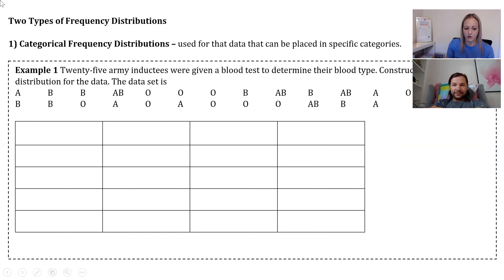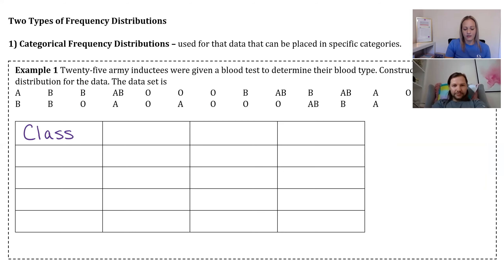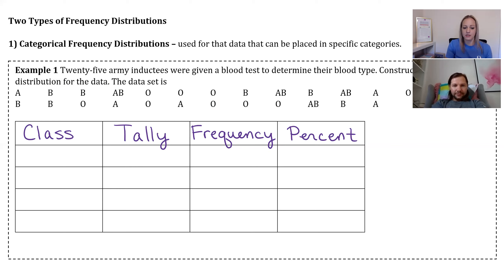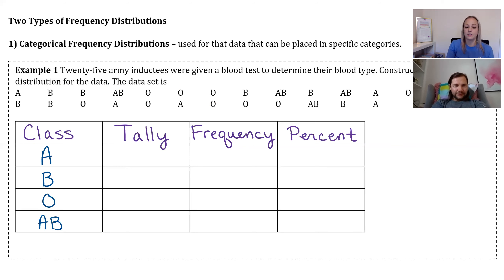Here's how we typically lay out the table. The first column holds the classes, the second is a tally column, the third is frequency, and the last is percent. The classes are just all the categories from your data. Since we're talking about blood types, the possible options are A, B, O, and AB — whatever categories are in your data, those are your classes.